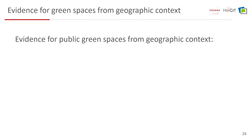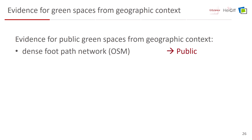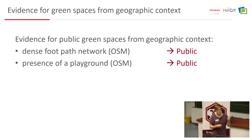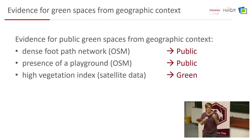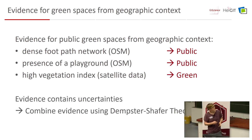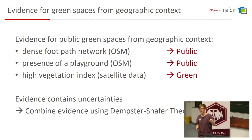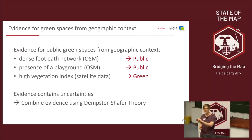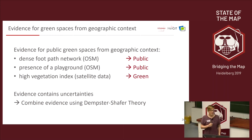We gather evidence from geographic context: a dense path network is evidence for public access; presence of a POI like a playground is another evidence for public access; and a high NDVI from satellite data is evidence for greenness. The problem is this evidence has high degrees of uncertainty. For example, if there's no playground mapped in OSM, it could be that there is no playground in reality, or there is one that's just not mapped. Similarly, the vegetation index has mixed pixels with uncertainty.